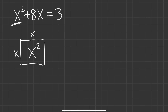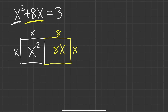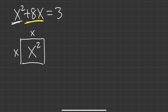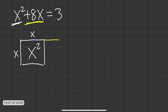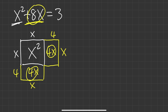For the plus 8x, we could draw it as a rectangle with side 8 and side x, giving area 8x. But that won't help us. Instead, divide 8 by 2 to get 4, and draw a 4-by-x rectangle on each side of the square. Each part gives 4x, and together that's 8x.